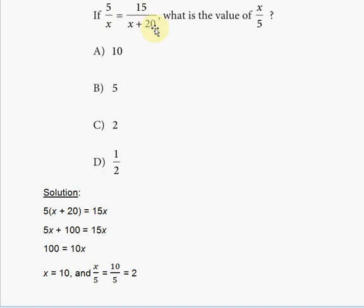It shows you that if 5 divided by x is equal to 15 divided by the sum of x and 20, what is the value of x over 5? You can do this two ways. You have to perform the cross multiplication.